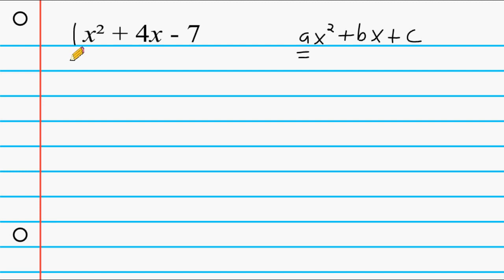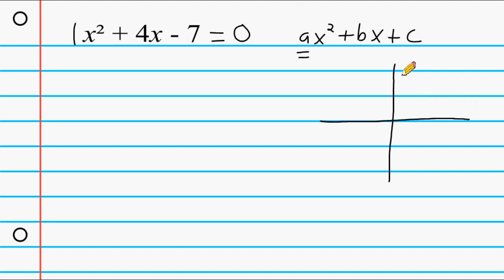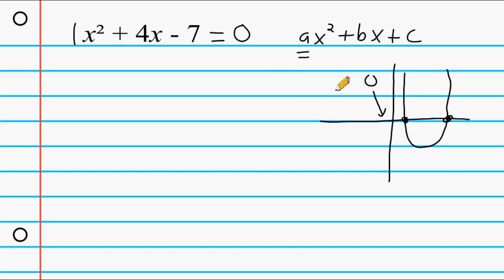Once you've verified that your a term equals 1, make sure the equation is set equal to 0. The reason it must be set to 0 is because with any quadratic equation, we are solving for the roots — meaning where the parabola intersects the x-axis. A lot of parabolas intersect the x-axis in two spots, which is why we frequently get two answers. Wherever the parabola crosses the x-axis, the y value equals 0. If your equation is not already set to 0, just start by setting it equal to 0.